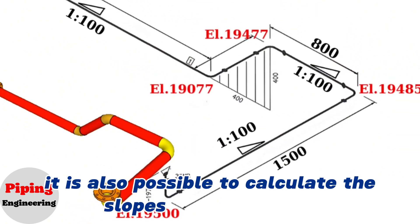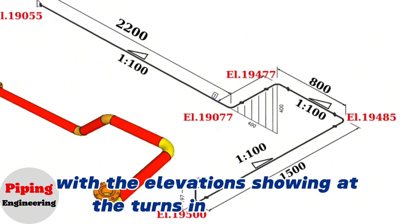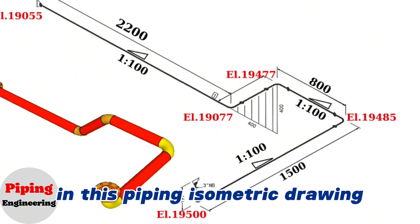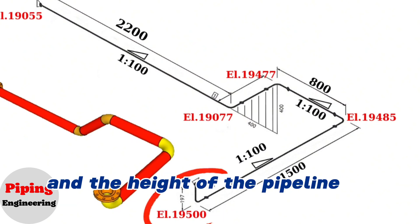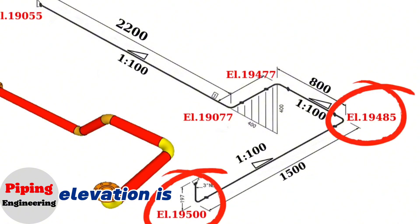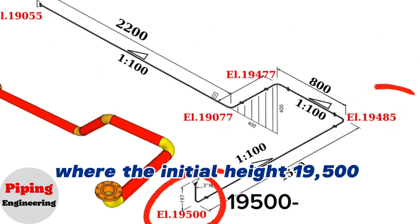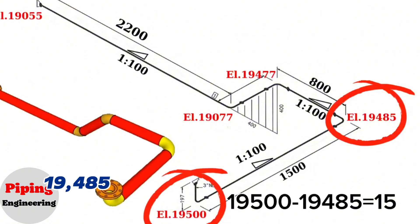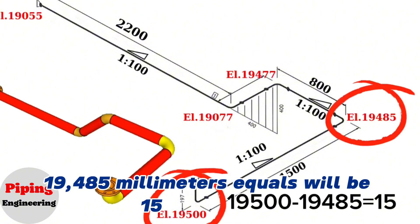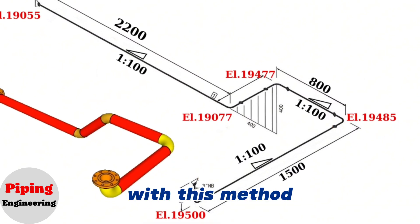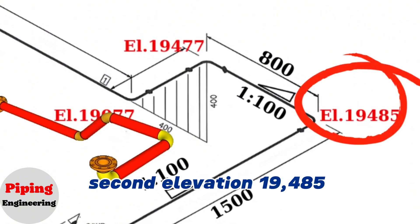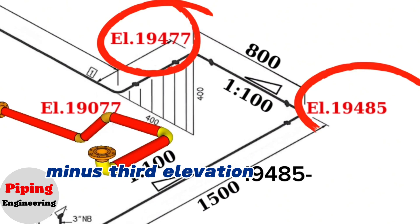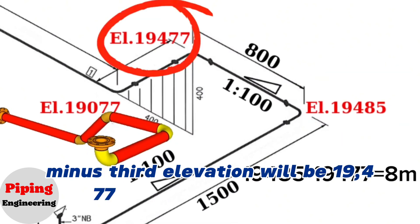It is also possible to calculate the slopes in the pipelines with the elevations showing at the turns in the pipeline. In this piping isometric drawing, the initial height of the pipeline elevation is 19,500 mm, and the height of the pipeline at the second turn with a slope of 1 colon 100 elevation is 19,485 mm. Where the initial height 19,500 mm minus the second height 19,485 mm equals 15 mm. With this method we can calculate the difference of the levels in the second and third rotations. Second elevation 19,485 mm minus third elevation 19,477 mm equals 8 mm.